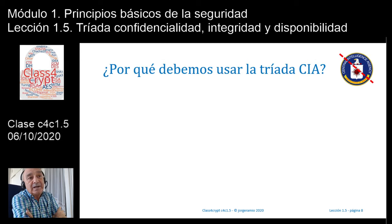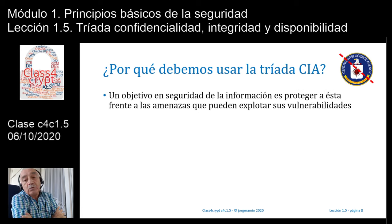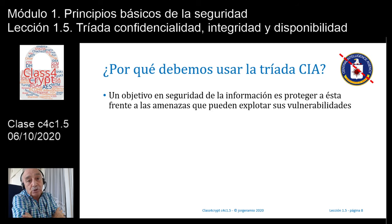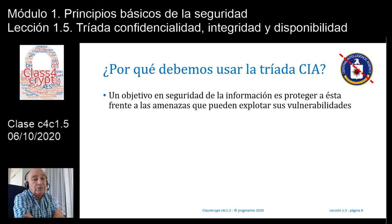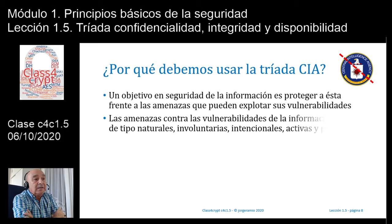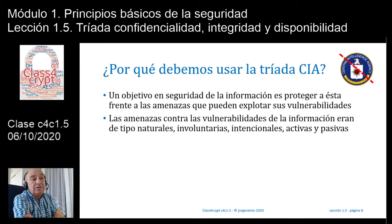¿Por qué debemos usar la Tríada CIA, que lógicamente no tiene absolutamente nada que ver con la agencia norteamericana? Un objetivo de la seguridad de la información es proteger a esta frente a las amenazas que pueden explotar sus vulnerabilidades. Como cualquier activo, la información tiene un conjunto de vulnerabilidades que es posible que las amenazas las exploten y, por lo tanto, me provoca un daño y será un riesgo que habrá que tratar. Estas amenazas contra las vulnerabilidades de la información eran del tipo naturales, involuntarias, intencionales, activas y pasivas.